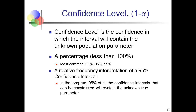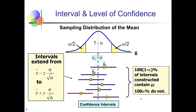This is a visual representation of the relative frequency interpretation of a 95% confidence interval. If we take a sample and calculate the point estimate, we use the formula—sample mean minus a Z critical value times the standard error—to find the lower bound, and add to find the upper bound. Most confidence intervals we create will contain the true population mean. With a 95% confidence level, 95% of intervals, like these blue ones, do contain the true population mean.